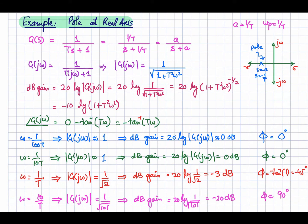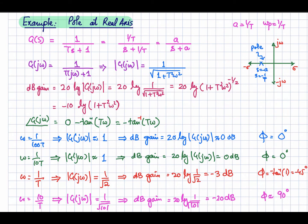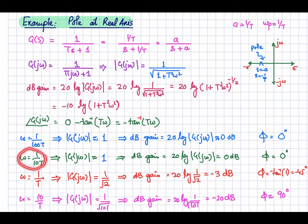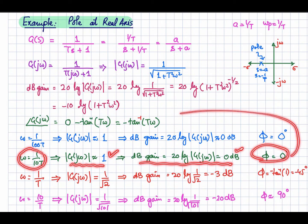Now let's vary the frequency and sketch the Bode plot. The pole frequency is 1/τ. We will change the frequency from 1/100 of this frequency to 100 times this frequency. When ω = 1/100τ, the τω term is very small, so magnitude ≈ 1, dB gain = 0 dB, and phase ≈ 0°. Similarly, at ω = 1/10τ, the magnitude is again ≈ 1, dB gain = 0 dB, and phase ≈ 0°.